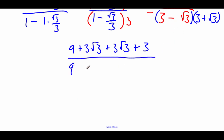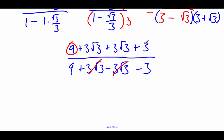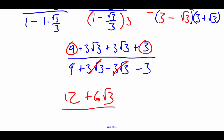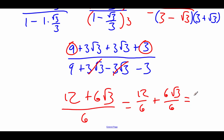On bottom, foiling it out: 3 times 3 is 9, then we get plus 3 root 3 and minus 3 root 3, and then a negative 3 on the end. Those middle terms cancel out. On top, combining like terms: 3 plus 9 is 12, and 3 root 3 plus 3 root 3 is 6 root 3. On bottom, 9 minus 3 is 6. Splitting the fraction: 12 over 6 plus 6 root 3 over 6 simplifies to 2 plus root 3. So that's our final answer.